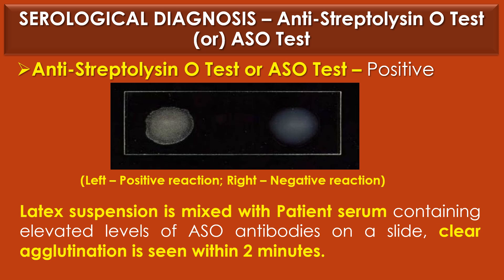The serological test used for diagnosis of Streptococcus pyogenes infection is the ASO test (anti-streptolysin O test). Streptococcus pyogenes shows a positive reaction, observed as clear agglutination within 2 minutes. ASO is a type of latex agglutination test in which latex particles are coated with purified and stabilized streptolysin O. When the latex suspension is mixed with patient serum containing elevated levels of ASO antibodies on a slide, clear agglutination is seen within 2 minutes.